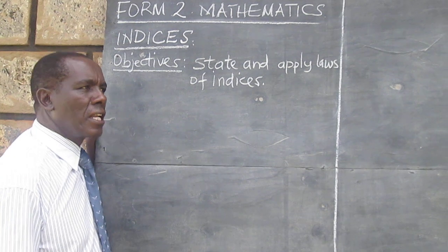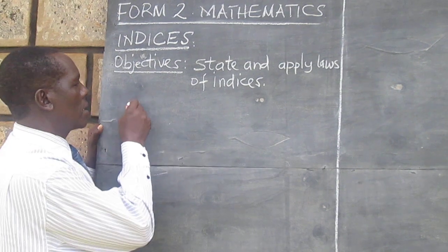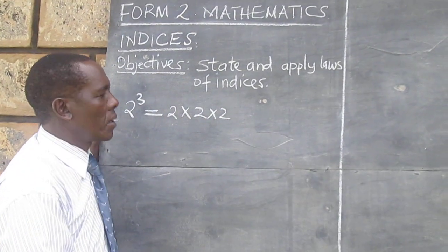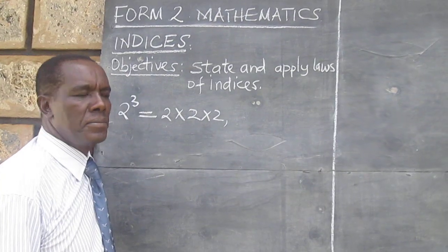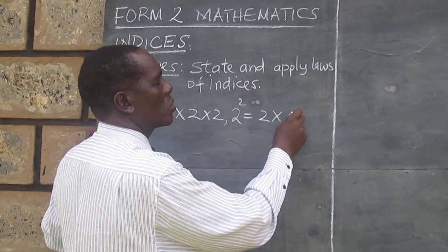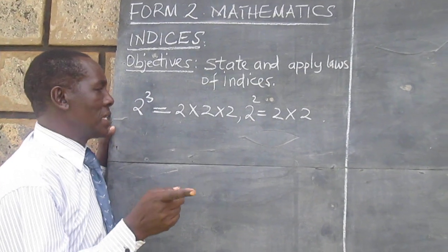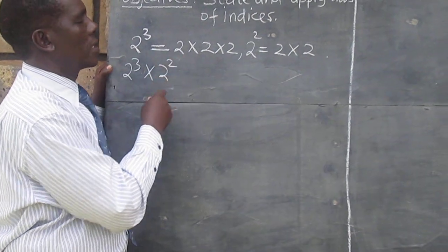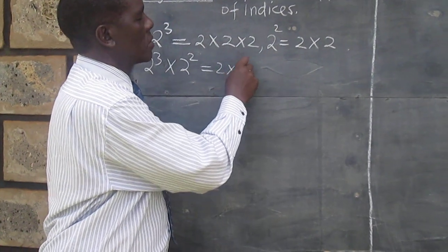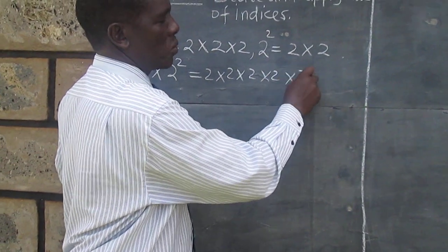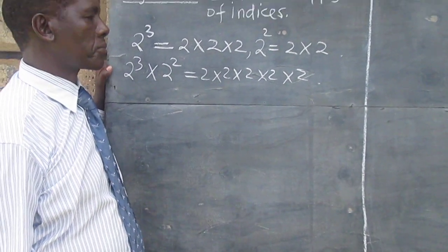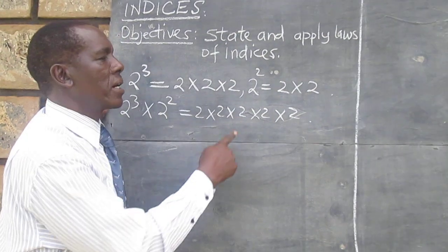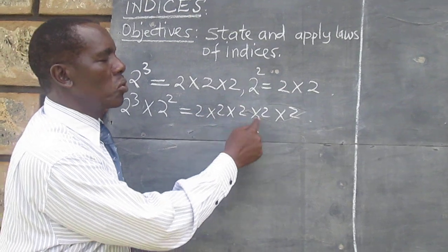Let's remind ourselves: in our introductory topic we saw that 2 raised to the power of 3 can be written as 2 times 2 times 2. In the same way, 2 squared is simply 2 times 2. This means that if we were multiplying 2 cubed by 2 squared, we would expand it as 2 × 2 × 2 × 2 × 2. We can see that when we multiply 2 raised to the power of 3 by 2 raised to the power of 2, we are getting 2 raised to the power of 5.